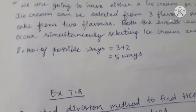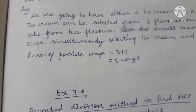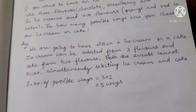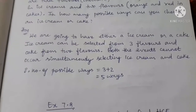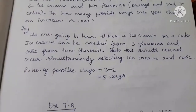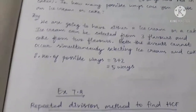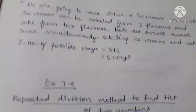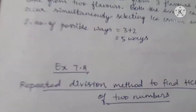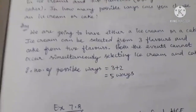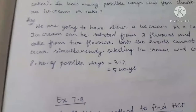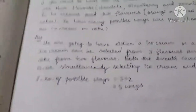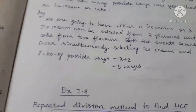The number of possibility of selecting a cake will also depend on the number of flavors. So if like this question is asked, you should write: what is given — we are going to have either ice cream or cake; ice cream can be selected in 3 flavors and cake from 2 flavors. Both events cannot occur simultaneously — you can't select one flavor in cake and one in chocolate. Only one can be chosen. Therefore, the number of possible ways is 3 plus 2, which is 5 ways.